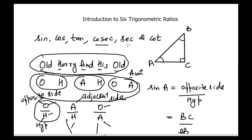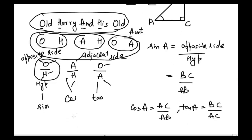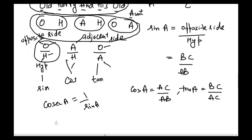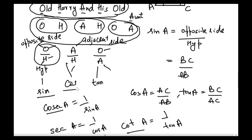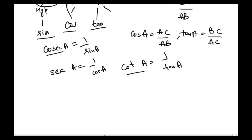The remaining three ratios are simply reciprocals: cosecant A is the reciprocal of sine A, so cosecant A = hypotenuse / opposite side = AB / BC. Secant A is the reciprocal of cosine A, so secant A = AB / AC. Cotangent A is the reciprocal of tangent A, so cotangent A = adjacent / opposite = AC / BC. If you memorize sine, cosine, and tangent, the other three follow automatically.